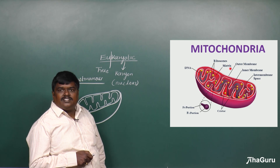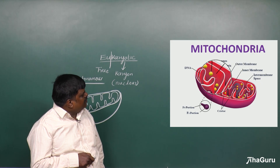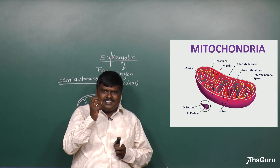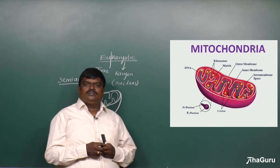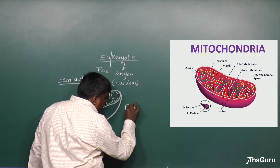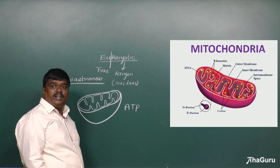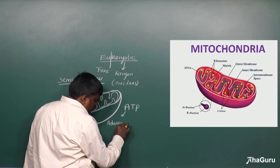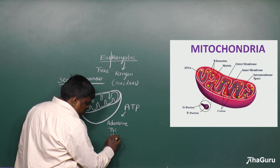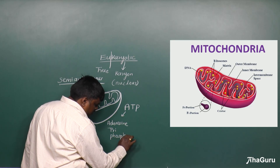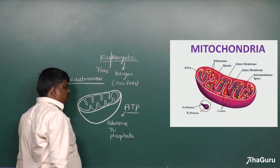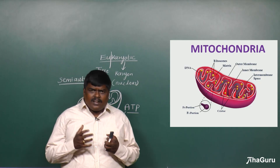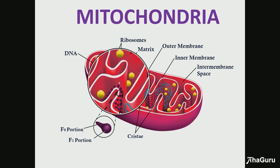The center region of the mitochondria — the region I am highlighting here — is called the matrix. The matrix is the region where energy is produced in the form of ATP (adenosine triphosphate). This process of energy production takes place in the matrix.